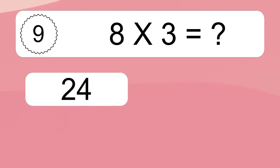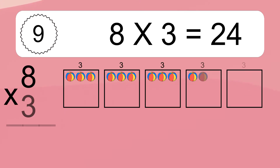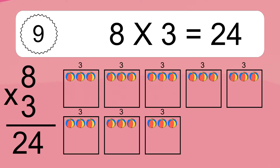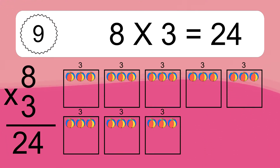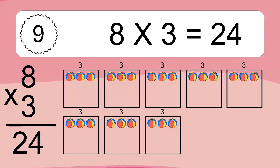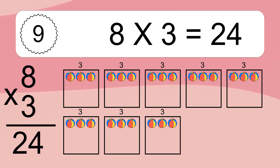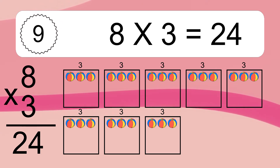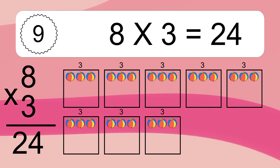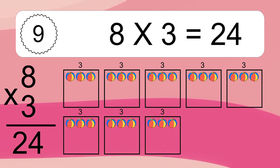8 times 3 equals 24. We have 8 boxes, and each box has 3 colorful balls inside. If you count all the balls in all the boxes together, you will have 8 times 3 balls. This equals 24 balls.